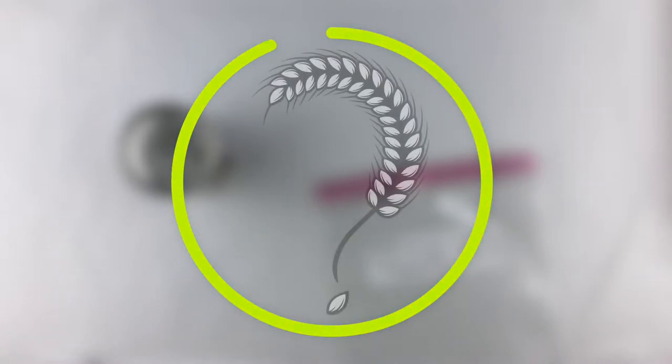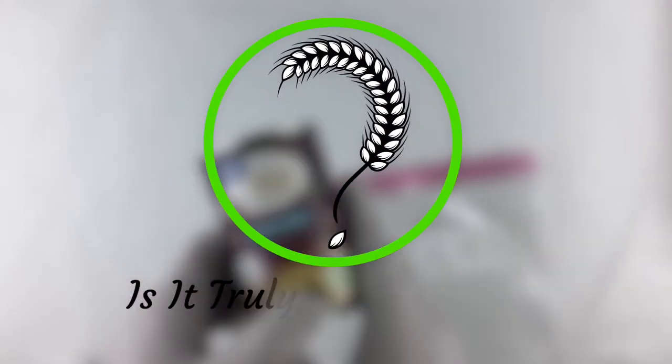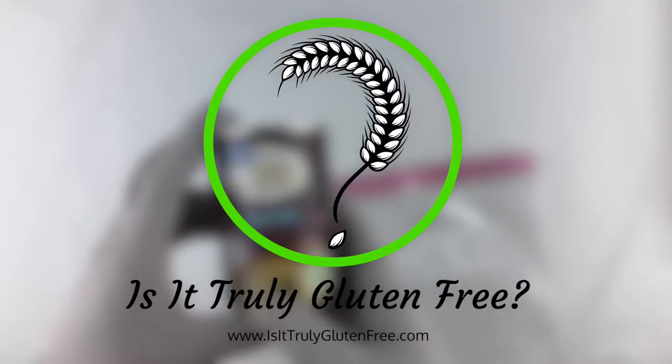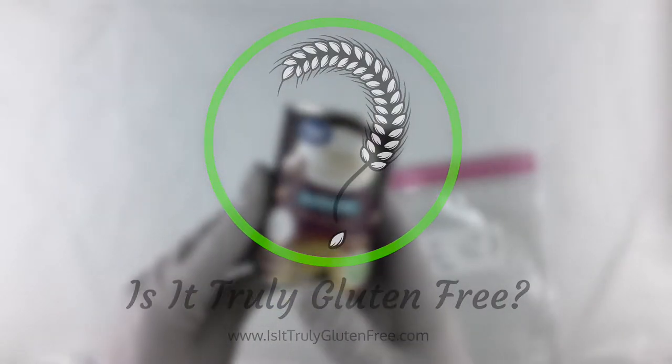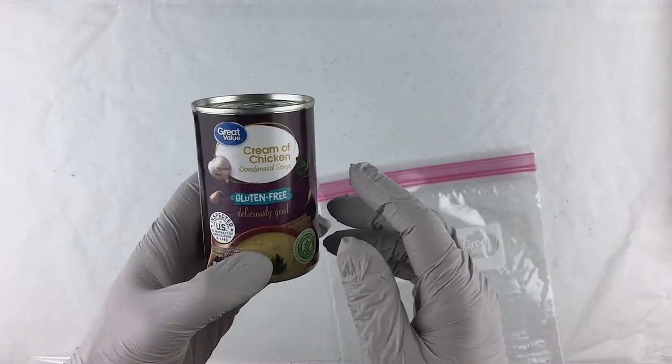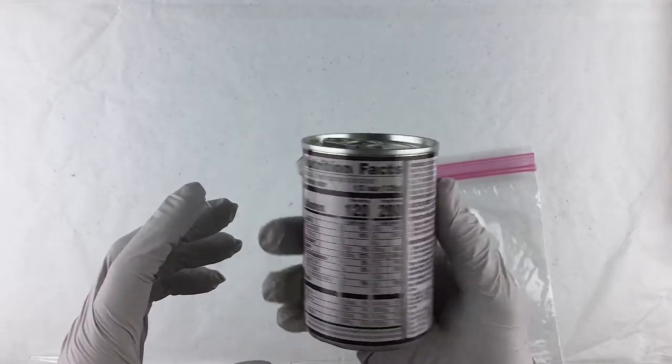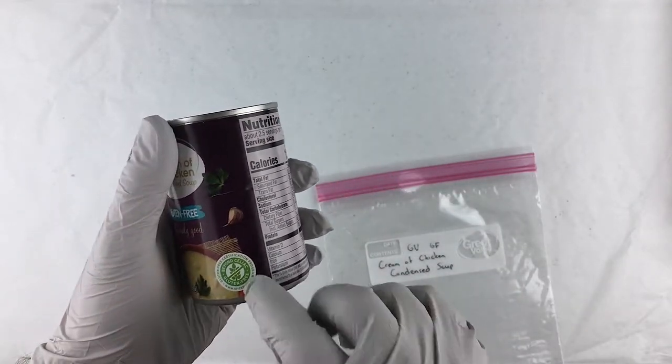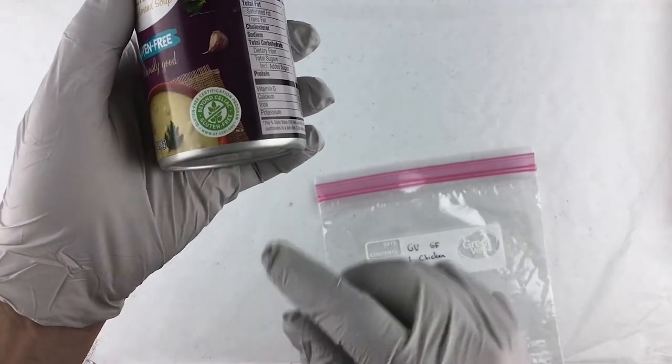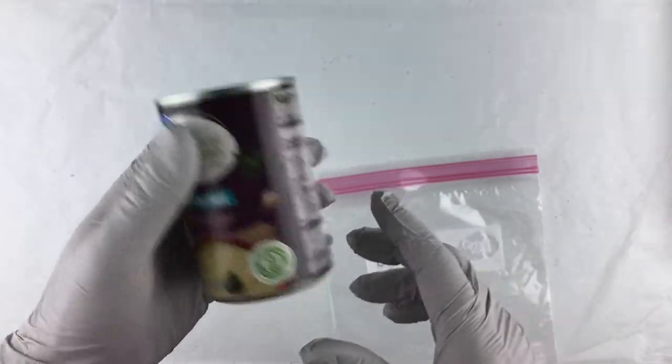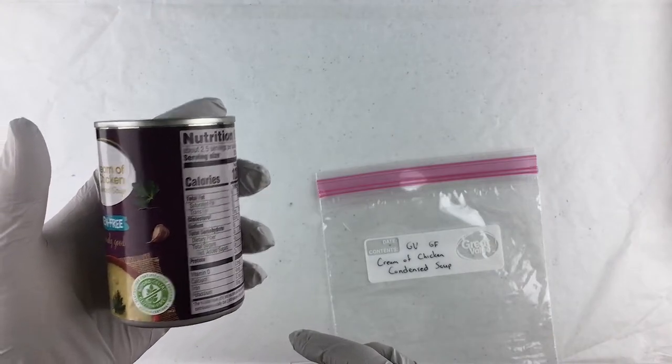Hello and welcome to Is It Truly Gluten-Free. At this point I'm going to test this product, Great Value Cream of Chicken Condensed Soup. Obviously this is labeled gluten-free and it also has the Beyond Celiac certification here, which means that it should be gluten-free below 20 parts per million.